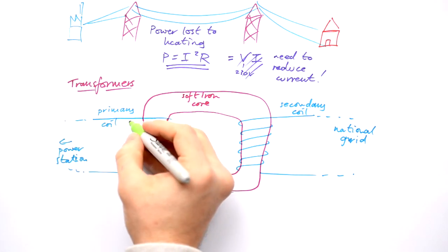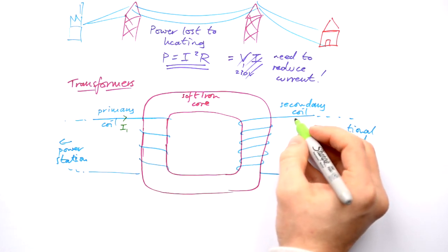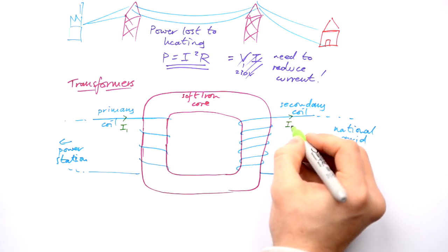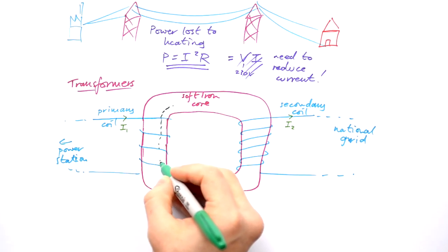We have a certain current going in here. I'm gonna call it I1. We have a different current coming out of here, I2. So how does it work? Well, we have a current going in here, and we know that that produces a magnetic field.